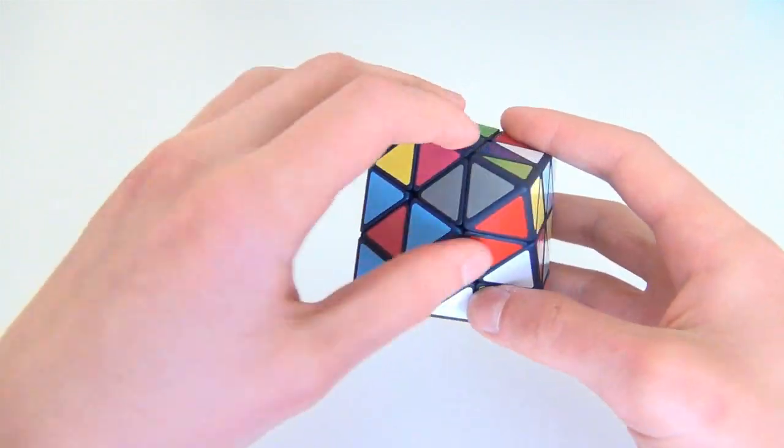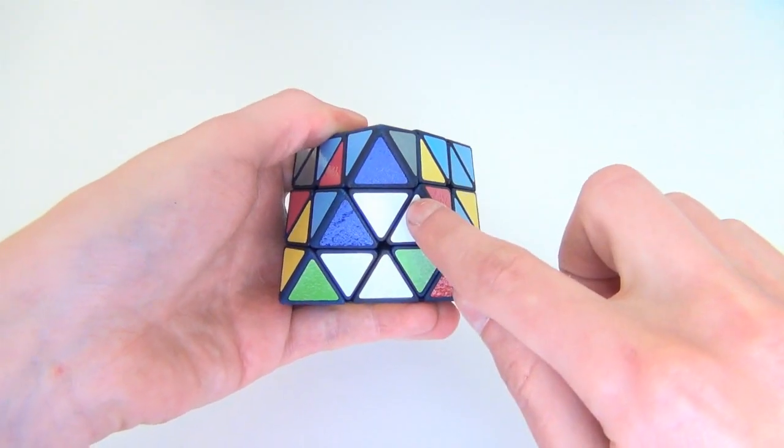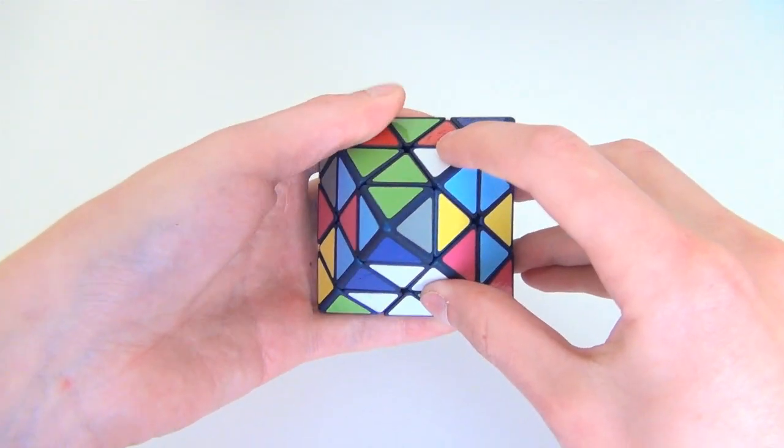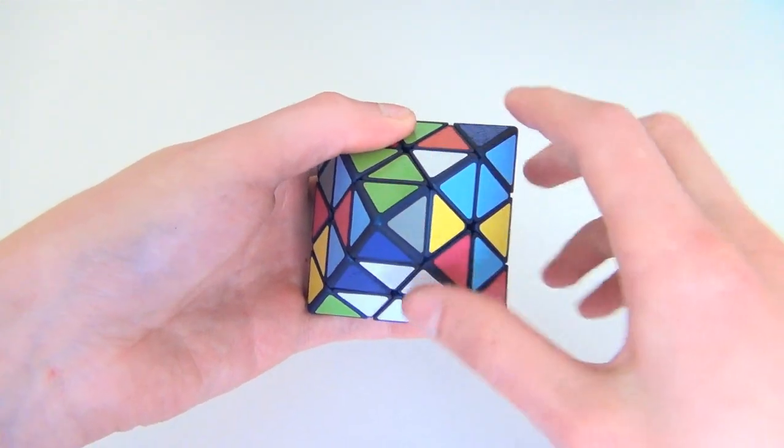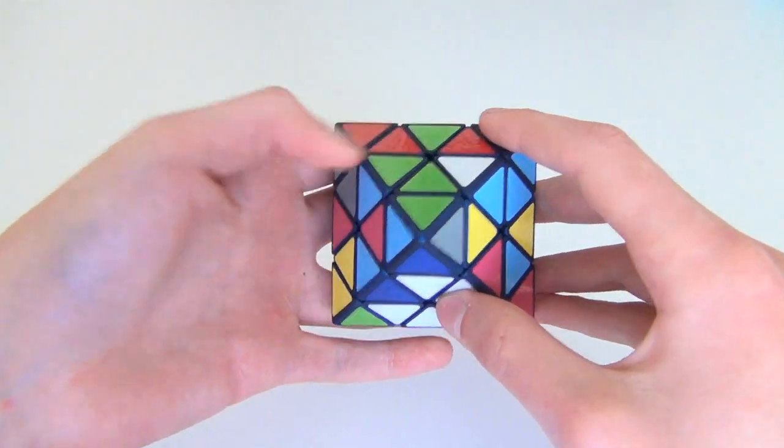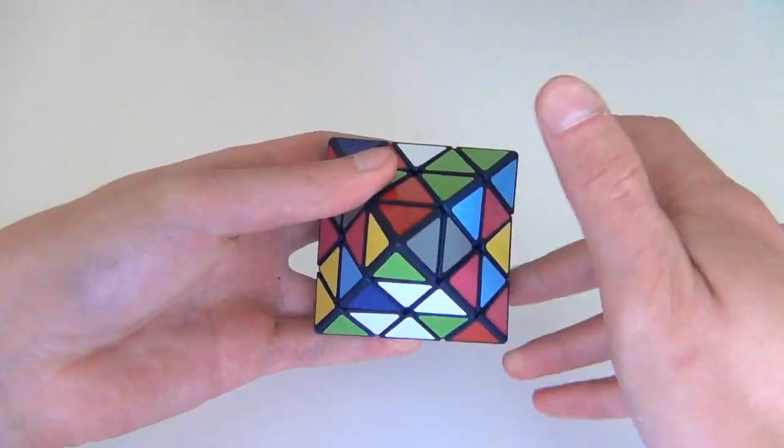The first thing we can do is an L' which will match this up here and this up here. And so with this white edge, we can pair this up with it to form the large trapezoid. So we could do U' and then an R.